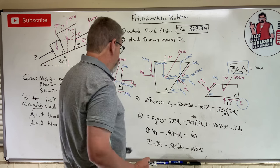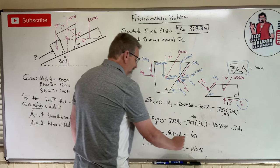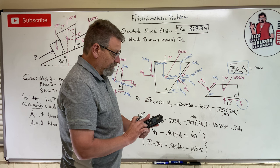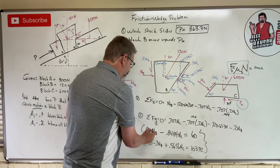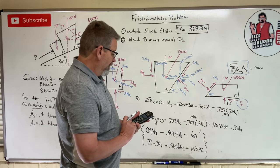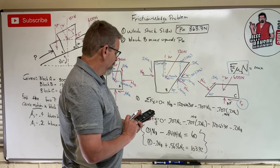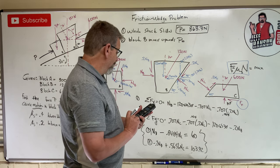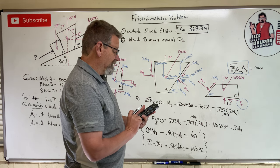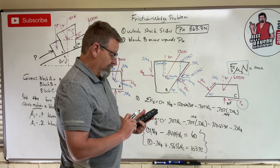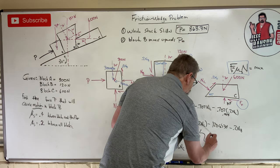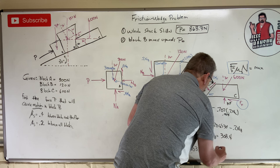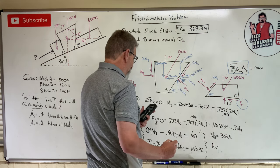Using the calculator's system solver (2×2), entering coefficients: [1, −0.8484, 60] and [−0.2, 0.5656, 103.92], the solution gives Nb = 308.4 N and Nc = 292.8 N.